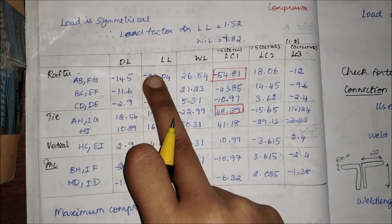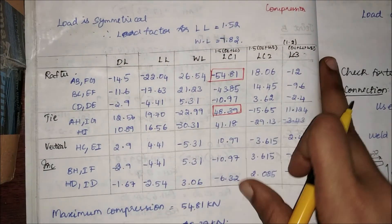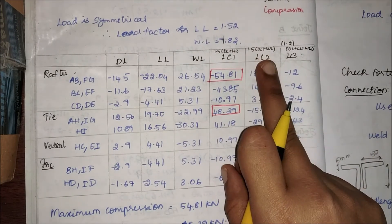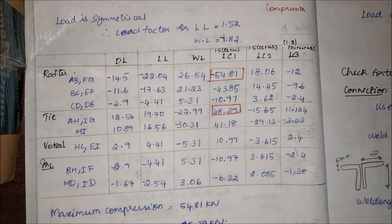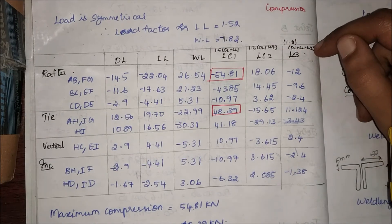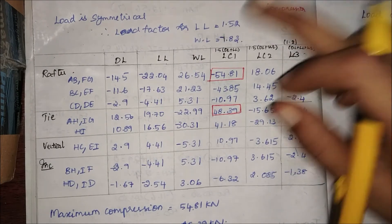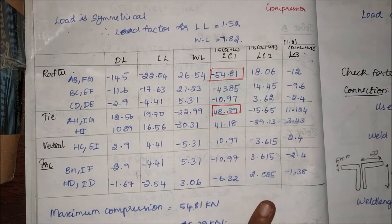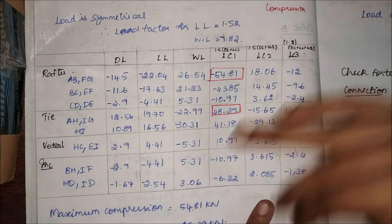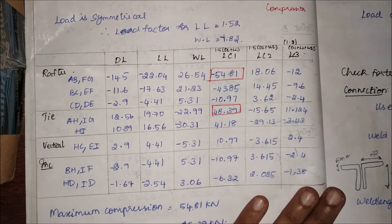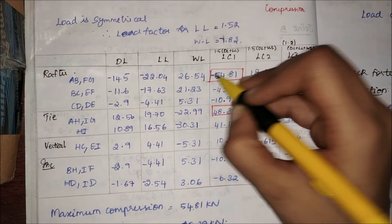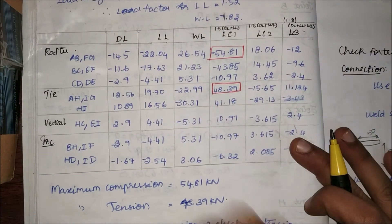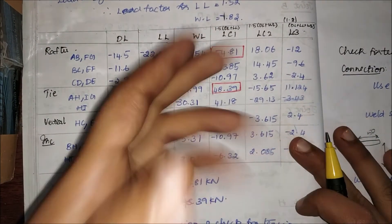Now that I have found all my dead load, live load, and wind load axial forces, I have to go for my combinations. I have three load combinations: 1.5 × (dead + live), 1.5 × (dead + wind), and 1.2 × (dead + live + wind). On adding all those I have to find the maximum tension and maximum compression. The sign convention is: negative is compression and positive is tension.